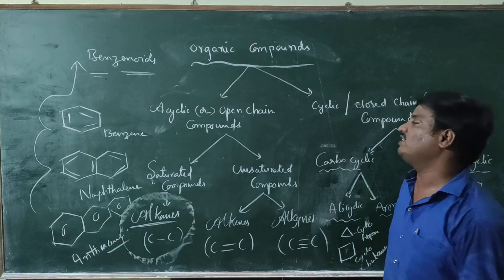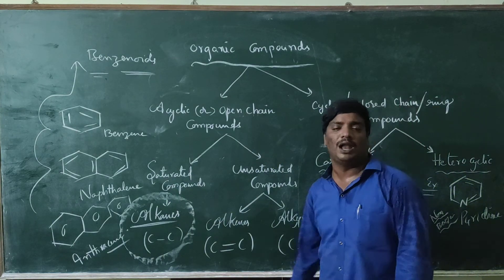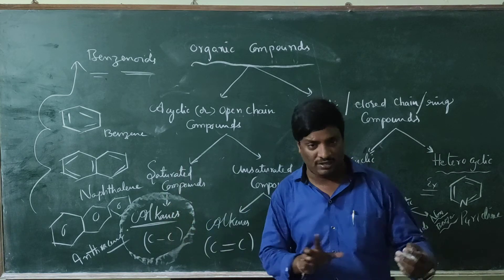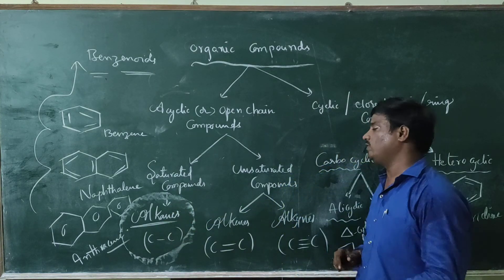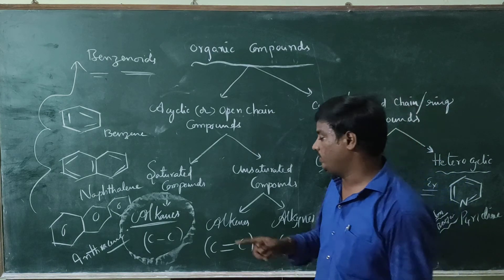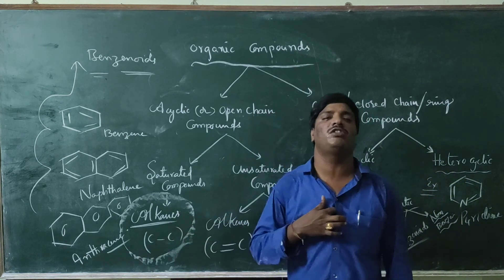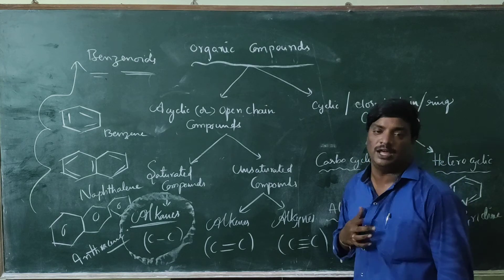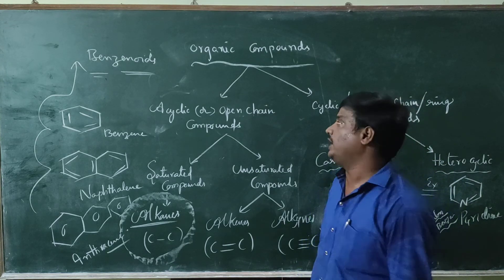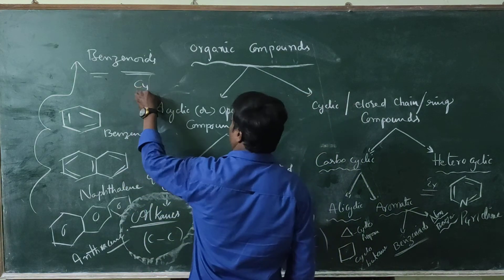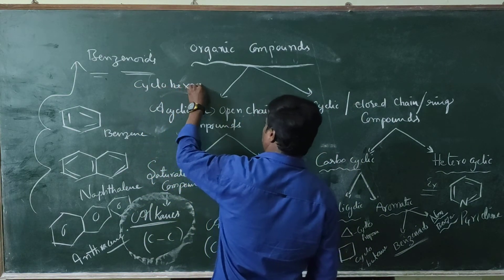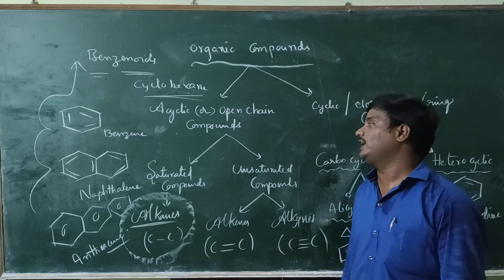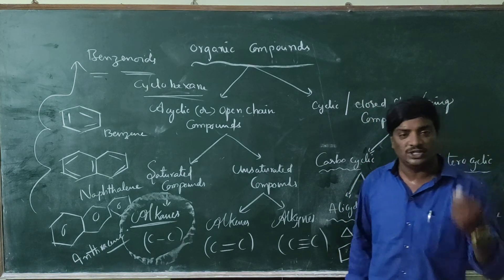Cyclic alkanes, also called cycloalkanes, have a body ring structure. Examples include cyclopropane, cyclobutane, and cyclohexane. Cyclohexane is very important, and its structure is significant in stereochemistry.